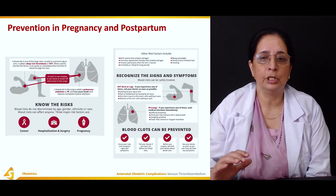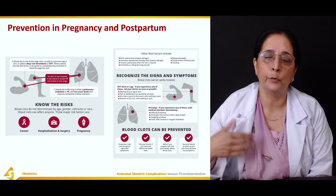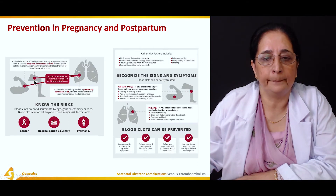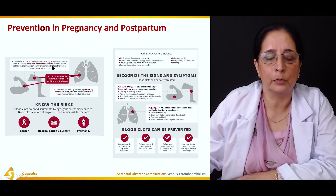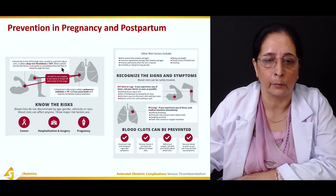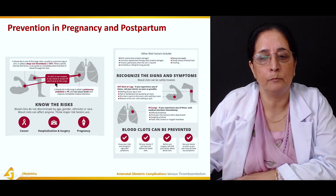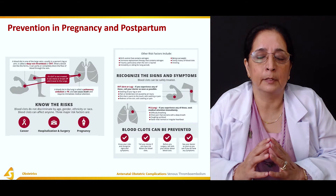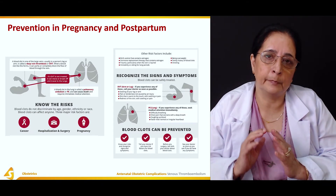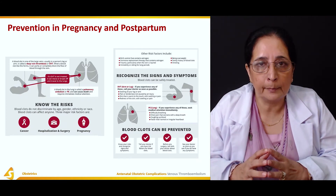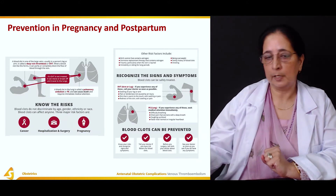Prevention of thromboembolism during pregnancy and the postpartum period is important. A blood clot in one of the large veins, usually in the leg or arm, is called deep vein thrombosis or DVT. If DVT is not treated, it can break off and travel to the lungs, causing pulmonary embolism — which is especially serious during pregnancy.